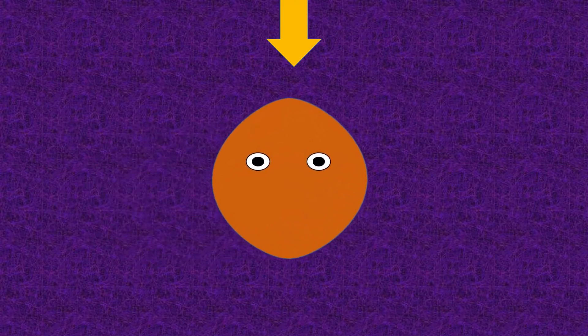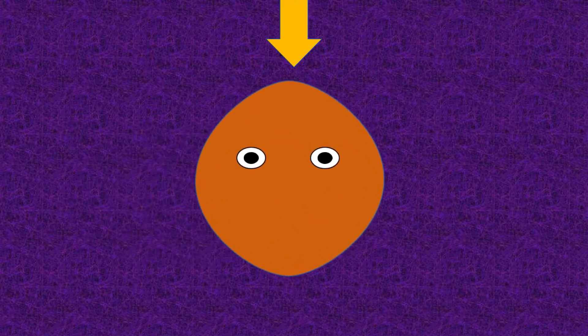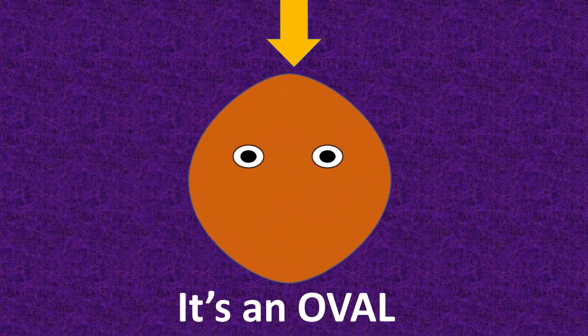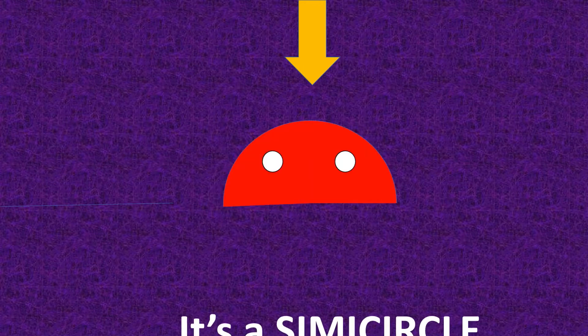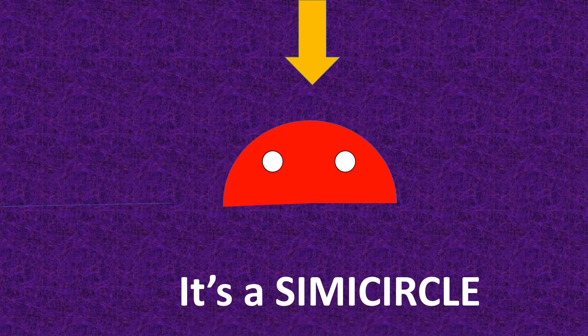What shape is it? It's an oval. What shape is it? It's a semicircle.